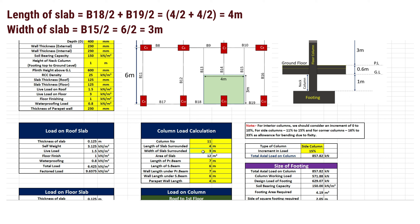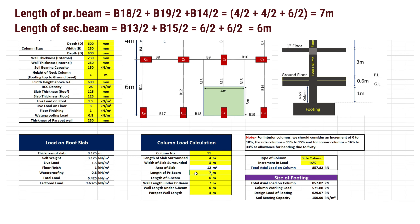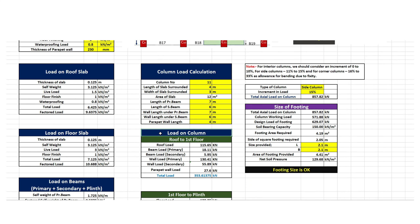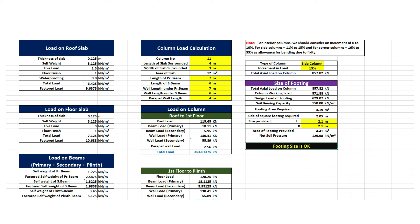We have to do the calculation for column 11, which is a side column. The length of slab surrounding this column is 4 meters and the width of slab is 3 meters, giving an area of slab of 12 meters square. The length of primary beams surrounding this column is 7 meters, equal to half the length of B18 plus half the length of B19 plus half the length of B14. The length of secondary beams is equal to half the length of B13 plus half the length of B15, which equals 6 meters. Wall length under primary beams is 7 meters and wall length under secondary beams is 6 meters. Parapet wall length is 4 meters, equal to half the length of B18 plus half the length of B19.